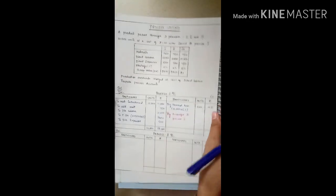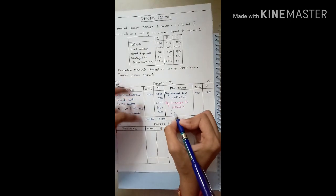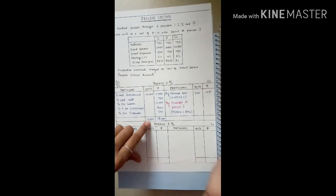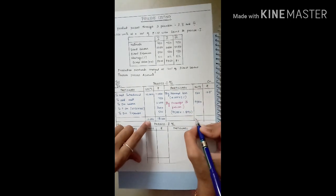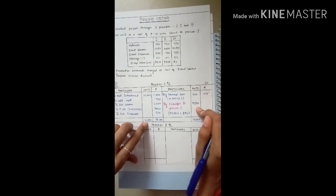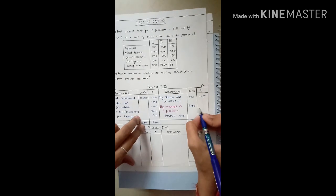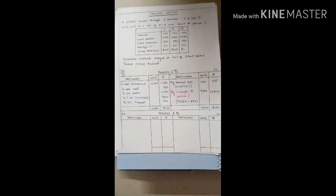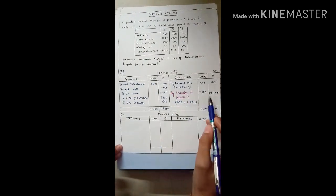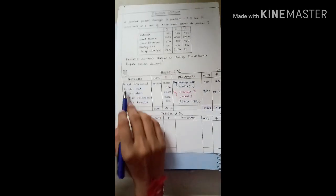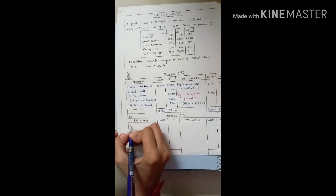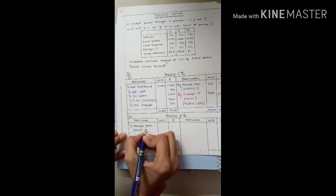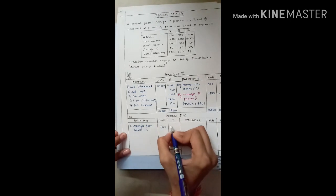Now we apply it: 10,000 minus 500 = 9,500 units into 1.8925 (from the working note) = 17,975. So the credit side also totals 18,100. The output of process one becomes the input for process two. We write 'transfer from process one' — 9,500 units at an amount of 17,975.